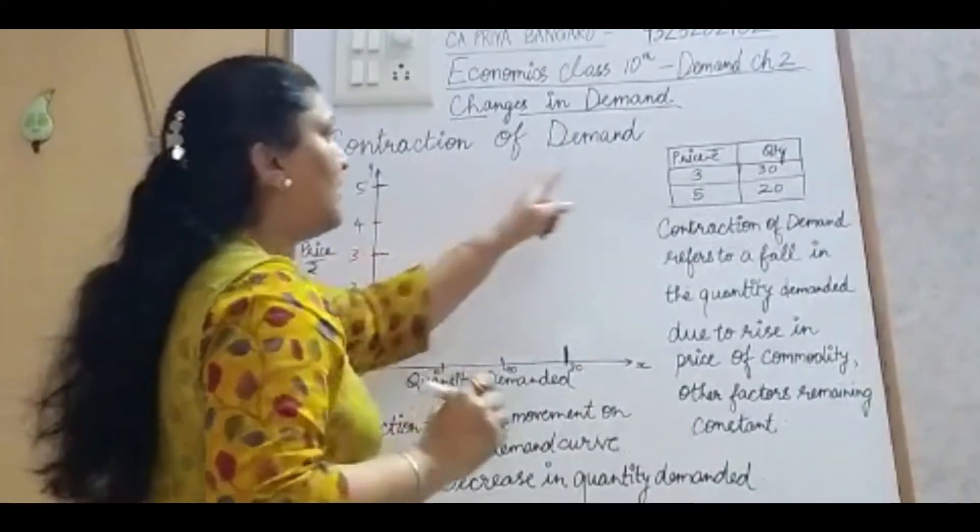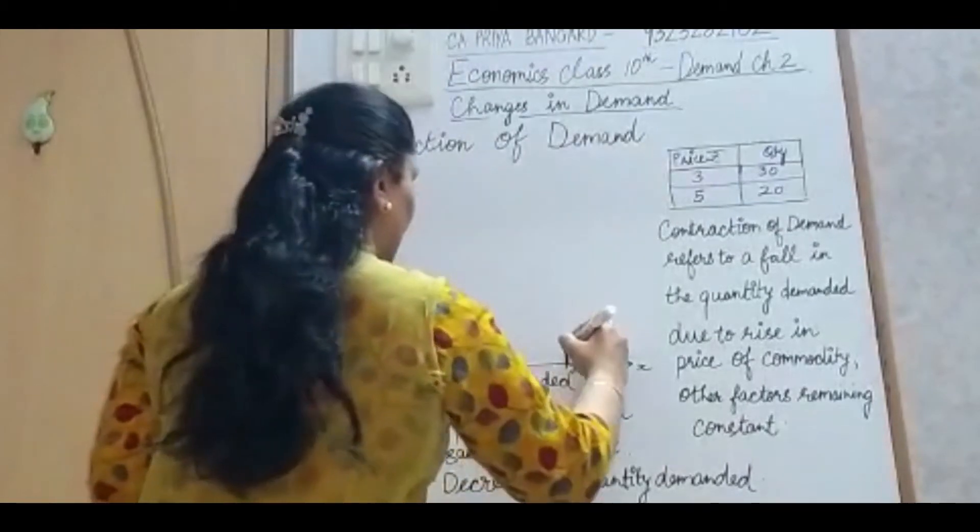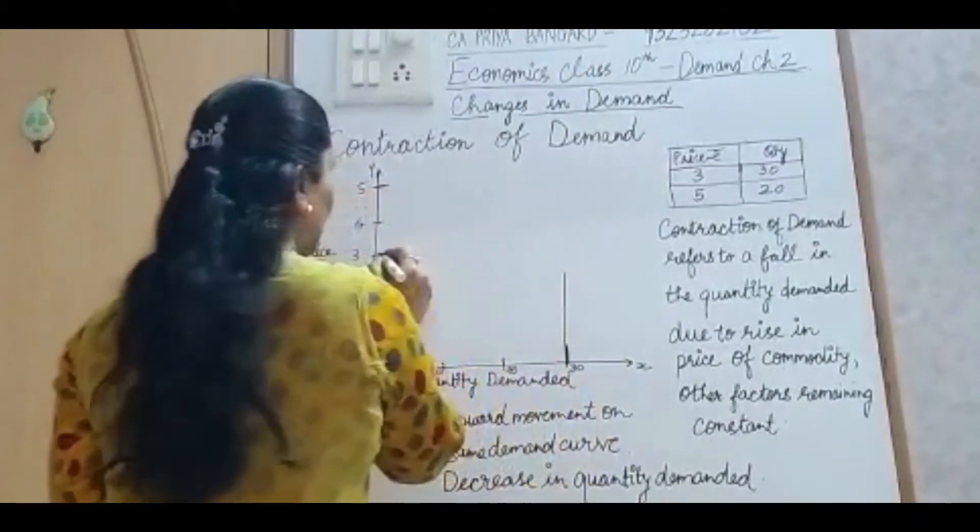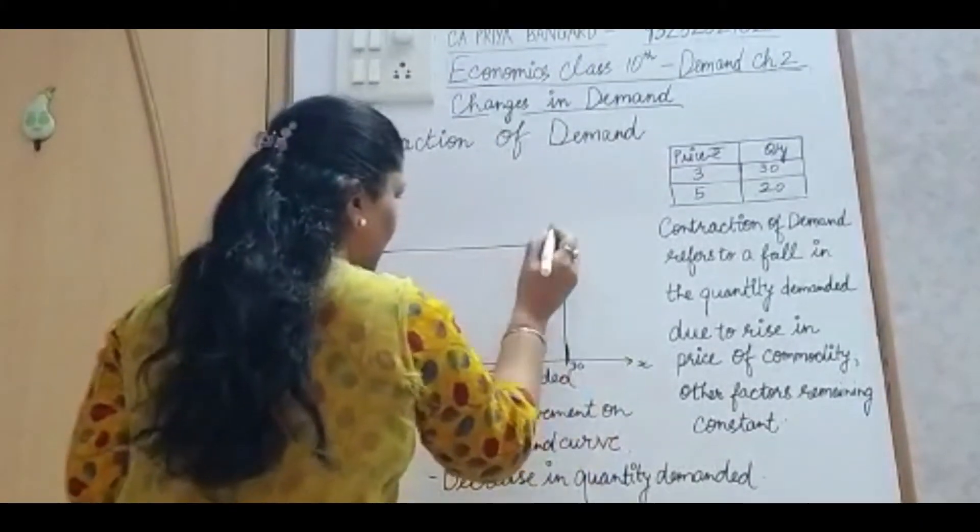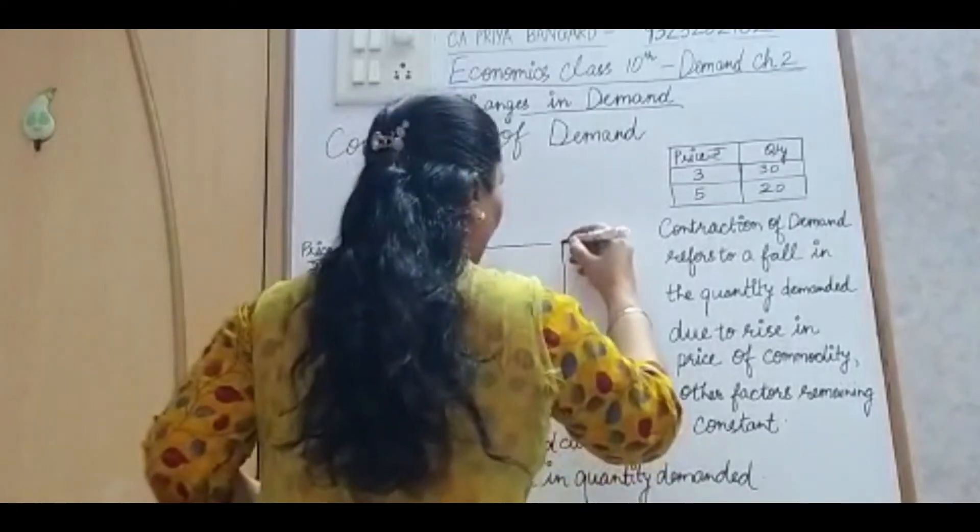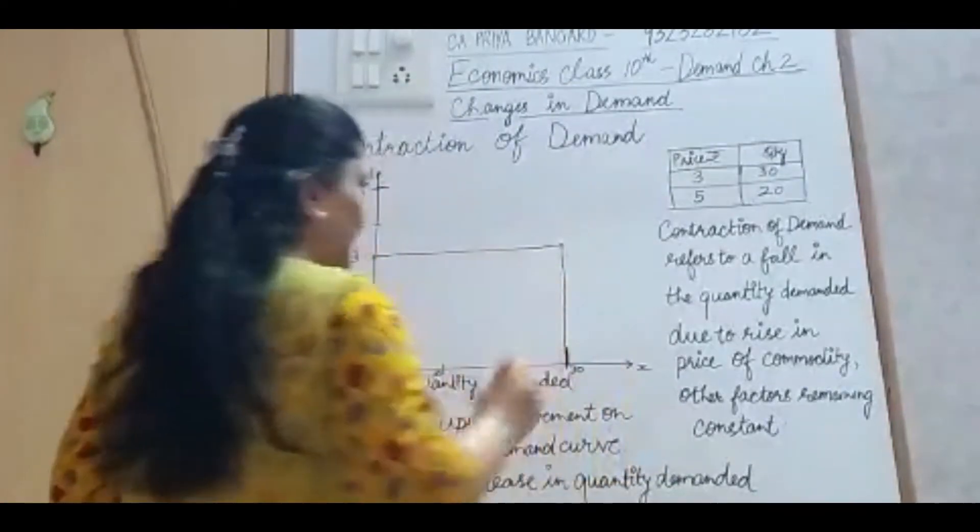So if the price is 3, 3 per unit, then quantity is 30. So you have to use a scale, 3 and 30. I get the point here.